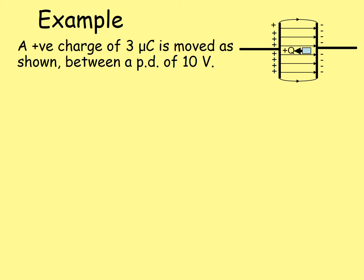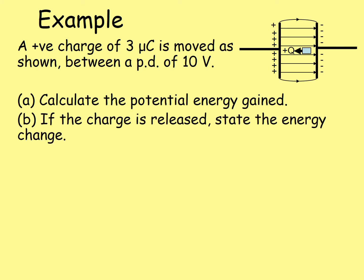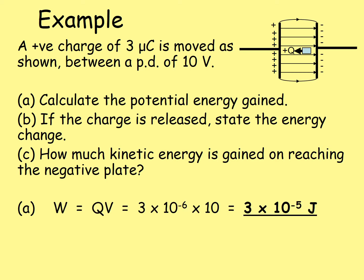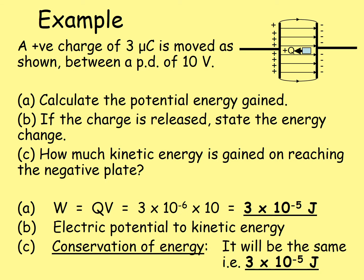In this example, a positive charge of three microcoulombs is moved between a potential difference of 10 volts. We need to calculate the potential energy gained, state the energy change if the charge is released, and calculate how much kinetic energy is gained on reaching the negative plate. The potential energy gained equals the work done, which is QV: 3 × 10⁻⁶ coulombs multiplied by 10 volts gives 3 × 10⁻⁵ joules. The energy change is electrical potential to kinetic, and due to conservation of energy, this equals the kinetic energy gained on reaching the negative plate.